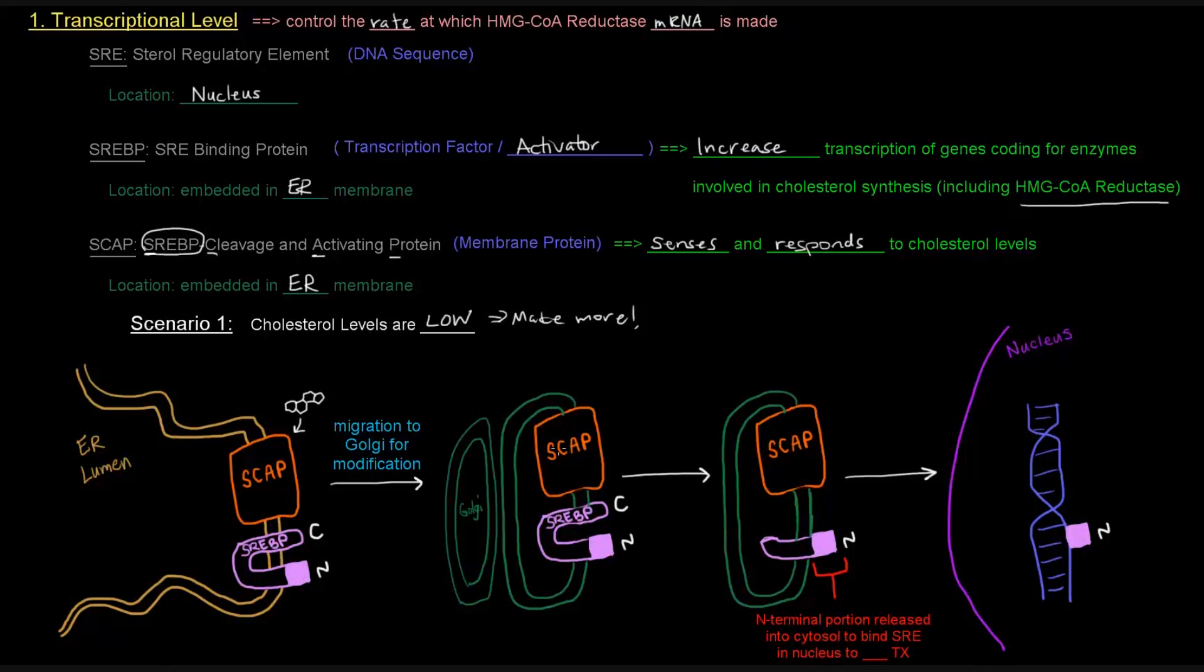The C is just the carboxy terminal domain of the SREBP. And the N is the amino terminal end. So we go to the Golgi for modification. Then what happens is that the SCAP protein will trigger its first cleavage of the SREBP. So it's going to cleave and activate the SREBP. So there's a first cleavage that cuts off a certain portion of it. And then there's a second cleavage that cleaves off specifically the amino terminal portion. And then that amino terminal portion is released into the cytosol and it eventually goes into the nucleus and binds the SRE in the nucleus to increase transcription.